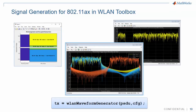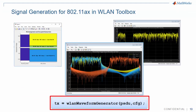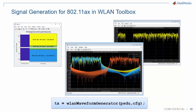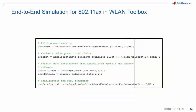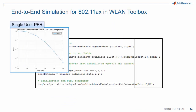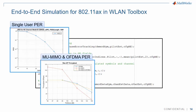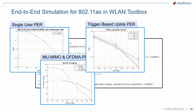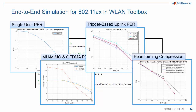Beyond signal generation, which is a single line of code once you have set up your configuration, Wireless LAN Toolbox also offers a receiver and several end-to-end examples, including single-user packet error rate computation, multi-user packet error rate computation, trigger-based uplink packet error rate, and packet error rate with different techniques for beamforming compression.